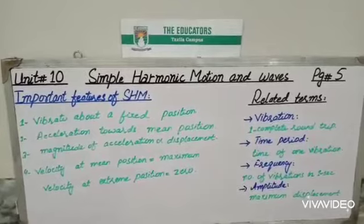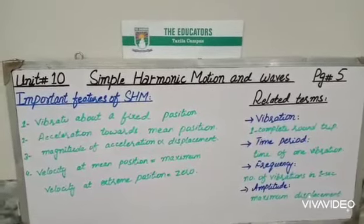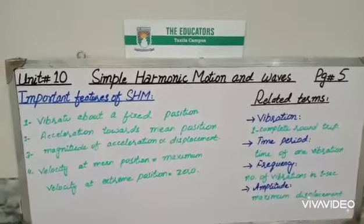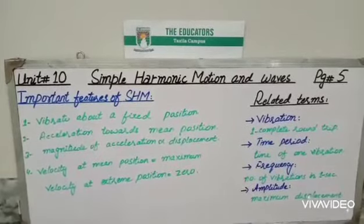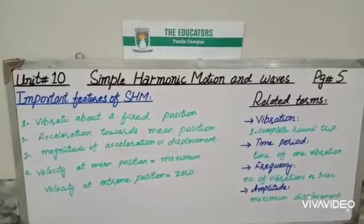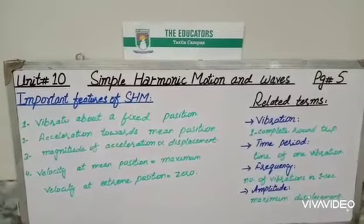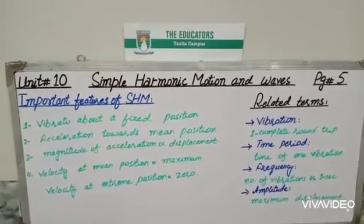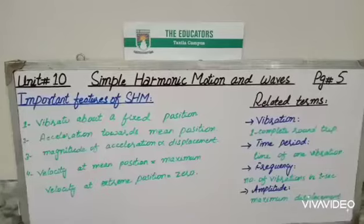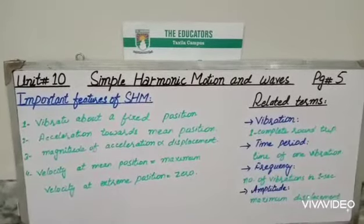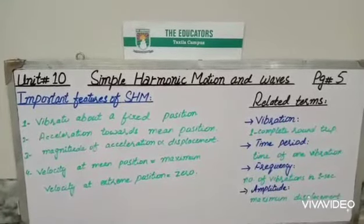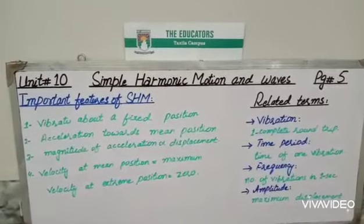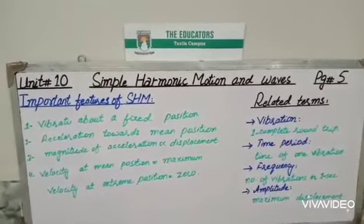The second feature is that its acceleration is always directed toward the mean position. This means acceleration has its maximum value at the extreme position, and as we move toward the mean position its value gets lower. Since acceleration is directly proportional to force, and force is zero at the mean position, acceleration is also zero at mean position and maximum at the extreme position.